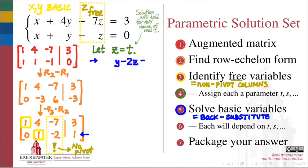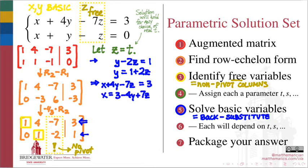Using the second equation and solving it for y, we find y is equal to 1 plus 2z. And then, substituting into the first equation, x is 3 minus 4y plus 7z, into which we can substitute the expression y equals 1 plus 2z to express x completely in terms of the free parameter z.